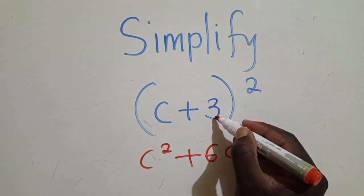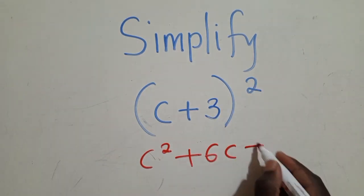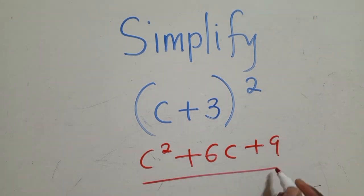And then the term which is right here, it's supposed to be squared. 3 squared is 9. Just like this.